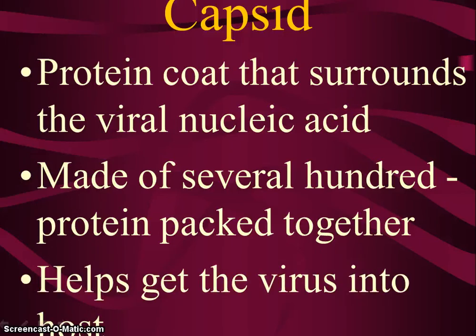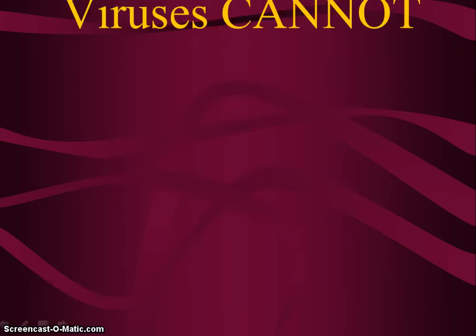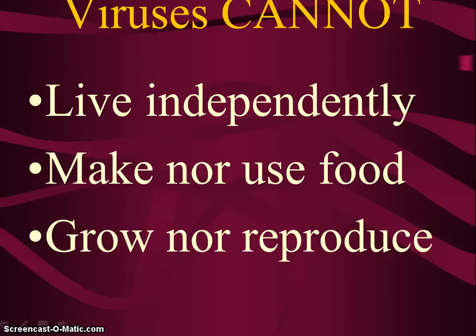This is the herpes virus. The human influenza virus has a complex envelope surrounding its capsid. The envelope is derived from the membrane of the host cell and has protein spikes that help the virus recognize and attach to host cells.